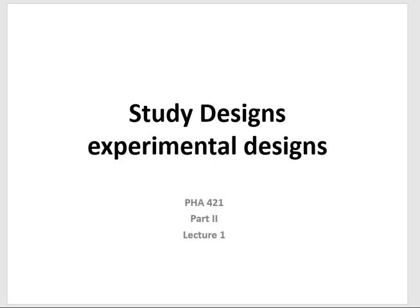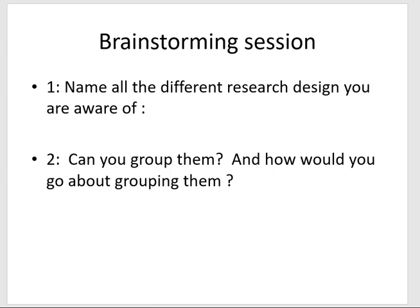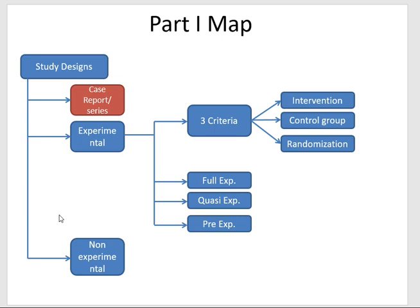The plan is to first think about the different study designs and group them into categories. This leads to the next slide, which shows that there are two major arms of designs: the experimental design and the non-experimental design. There is also something different we can talk about — case reports and case series.